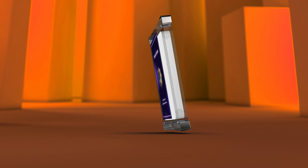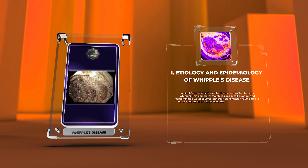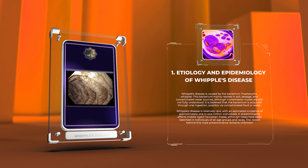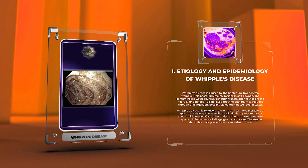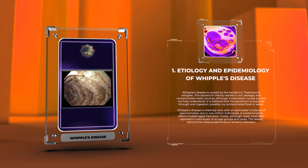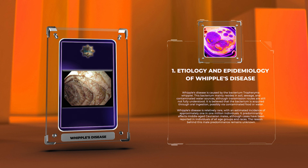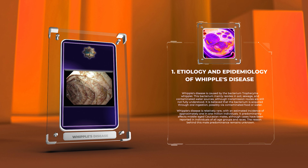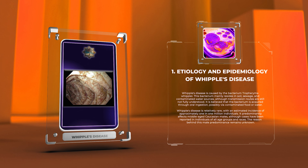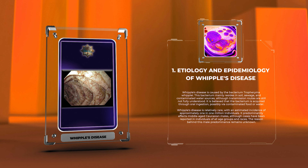Whipple's disease is caused by the bacterium Tropheryma whipplei. This bacterium mainly resides in soil, sewage, and contaminated water sources, although transmission routes are still not fully understood. It is believed that the bacterium is acquired through oral ingestion, possibly via contaminated food or water. Whipple's disease is relatively rare, with an estimated incidence of approximately 1 in 1 million individuals. It predominantly affects middle-aged Caucasian males, although cases have been reported in individuals of all age groups and races. The reason behind this male predominance remains unknown.